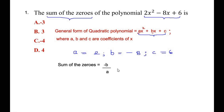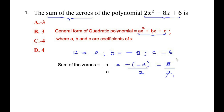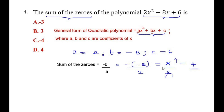The sum of the zeros is given as minus b over a. We have b equal to negative 8, so it is minus of minus 8 over a, which is 2. Minus of minus gives plus, so we get plus 8 over 2, which equals 4. The sum of the zeros is 4, so the answer is option D which is 4.